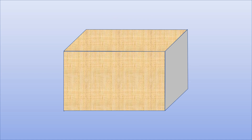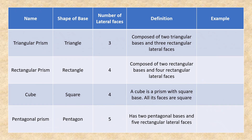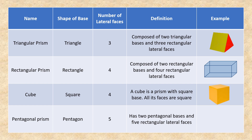A rectangular prism has six faces, eight vertices, and twelve edges. A prism is a polyhedron that has two congruent parallel faces called bases. There are many different kinds of prisms, and a prism is named according to the shape of each base. For example, a rectangular prism is composed of two rectangular bases and four rectangular lateral faces.